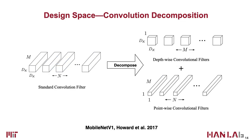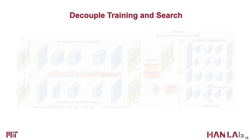We observe that decomposing convolutions in certain layers also benefits the generator design in CGANs. On top of it, existing generators use handcrafted channel numbers across all layers, which contains redundancy and is far from optimal. To further improve the compression ratio, we automatically select the channel width in the generators using fine-grained channel pruning to remove redundancy.